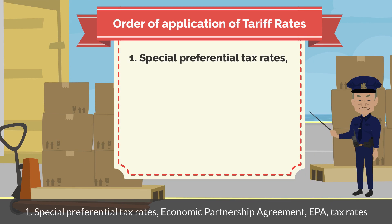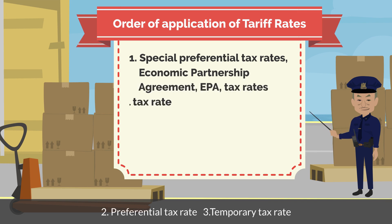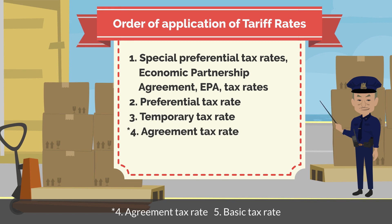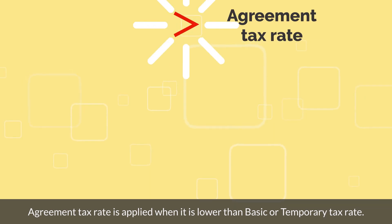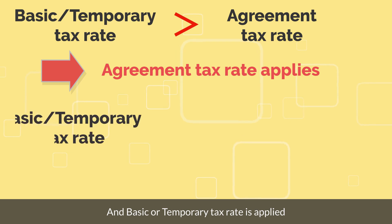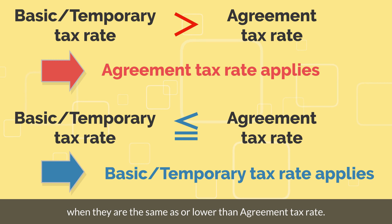1. Special Preferential Tax Rate. 2. Economic Partnership Agreement (EPA) Tax Rate. 3. Preferential Tax Rate. 4. Temporary Tax Rate. 5. Agreement Tax Rate. 6. Basic Tax Rate. Agreement Tax Rate is applied when it is lower than the basic or temporary tax rate, and the basic or temporary tax rate is applied when they are the same as or lower than the agreement tax rate.